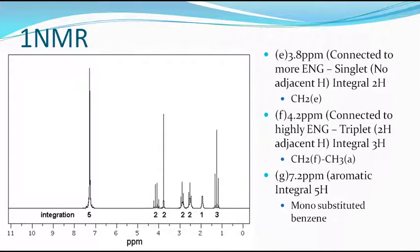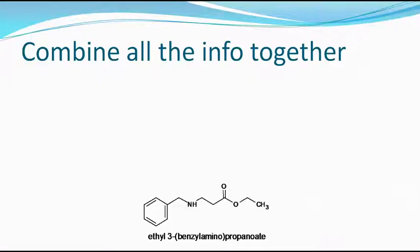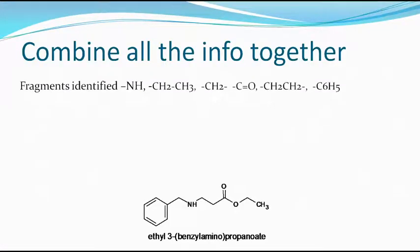One more signal at 7.2 PPM with 5 hydrogens looks like an aromatic system — a monosubstituted aromatic ring because it has 5 hydrogens. Combining all the fragments together, we have identified an NH group, a CH3CH2 group, a CH2 group, a CO group, a CH2CH2 group, and a C6H5CH2 benzyl group.